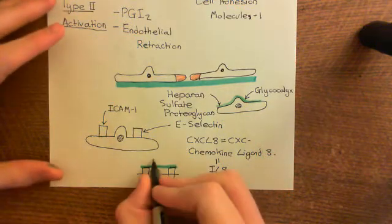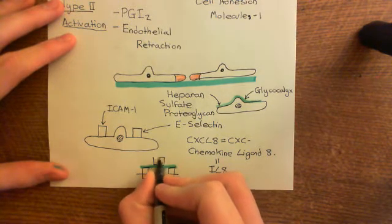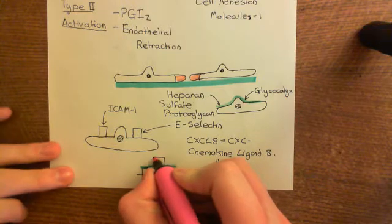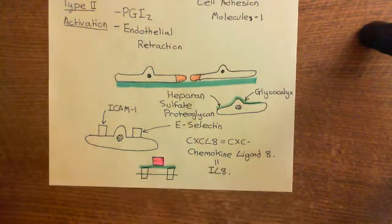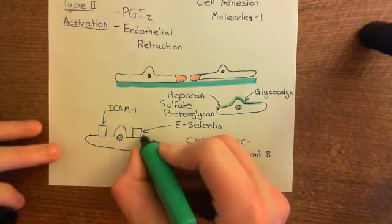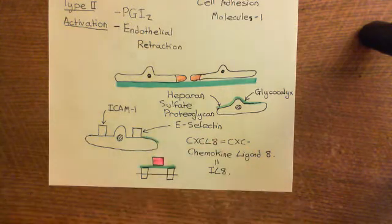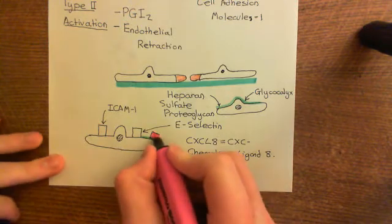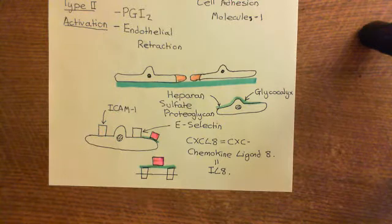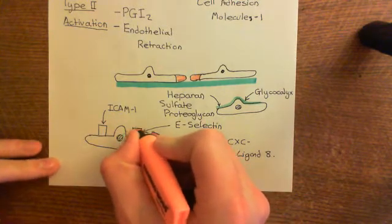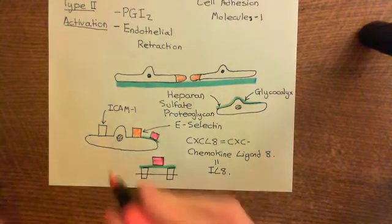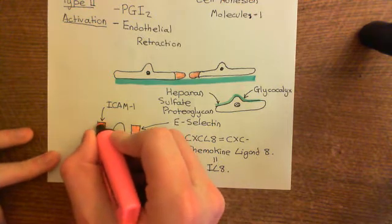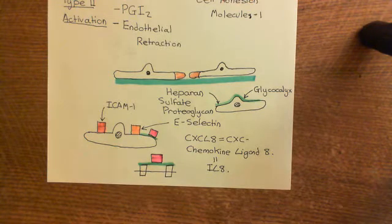CXCL8 is going to end up attached to the heparan sulfate proteoglycan within the glycocalyx of our endothelial cell. So it's not an integral membrane protein and not attached directly to integral membrane proteins; instead, it's attached to the heparan sulfate proteoglycan, which in turn is attached to integral membrane proteins. The two key new players here are E-selectin and CXCL8, while ICAM-1 has simply been upregulated by type 2 activation.